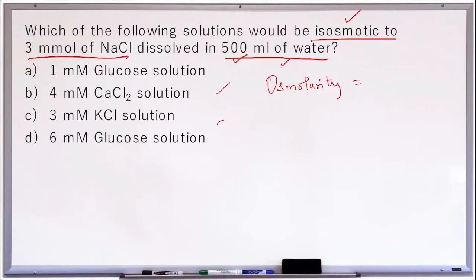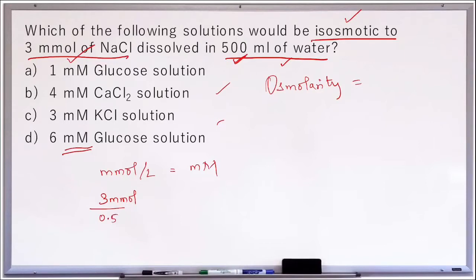The given unit is millimoles in 500 ml of water, so we use millimolar concentration. First, let's convert millimoles into millimolar solution. Millimole per liter of solution is called a millimolar solution. The given solution contains 3 millimoles of sodium chloride in half a liter of water, so this equals a 6 millimolar solution.